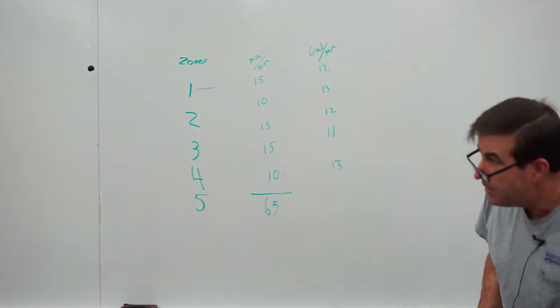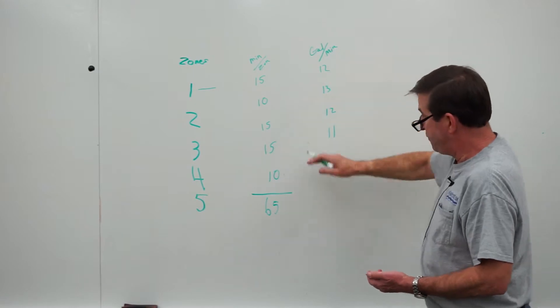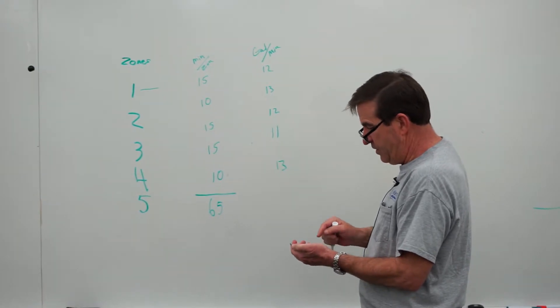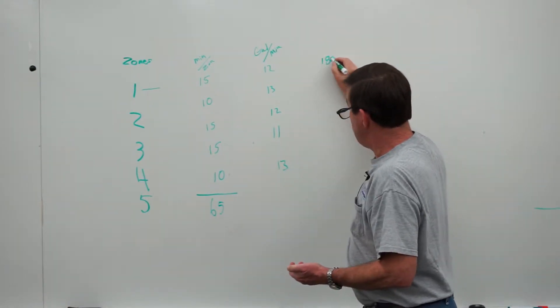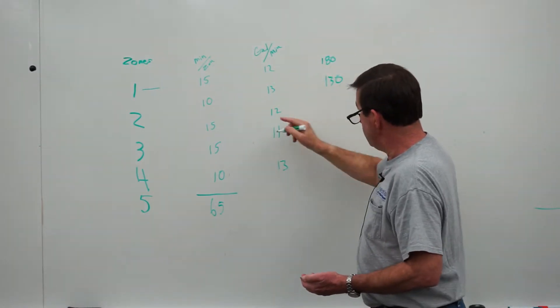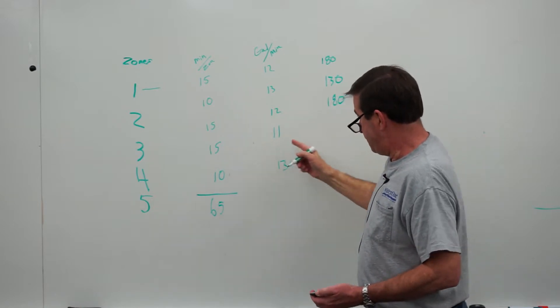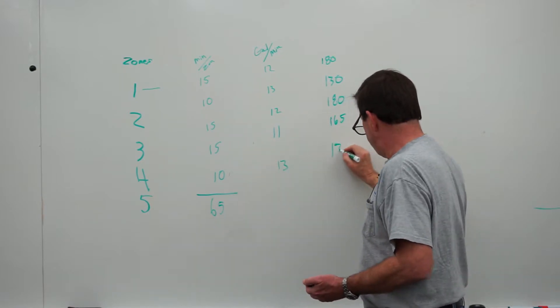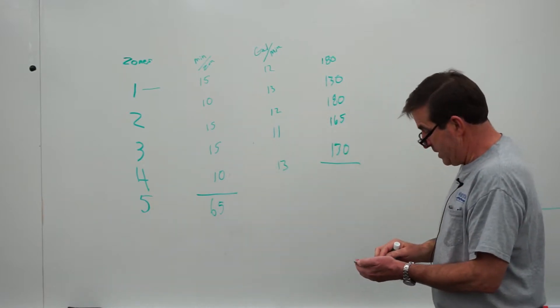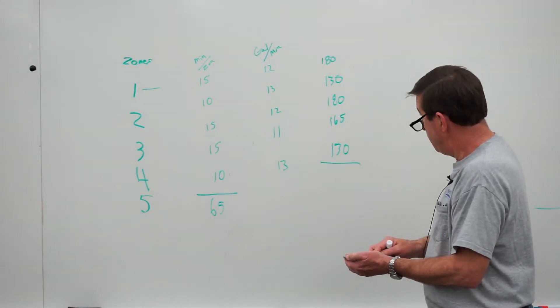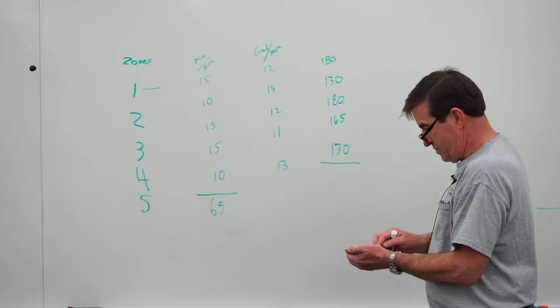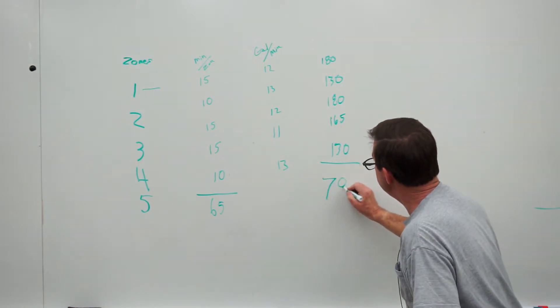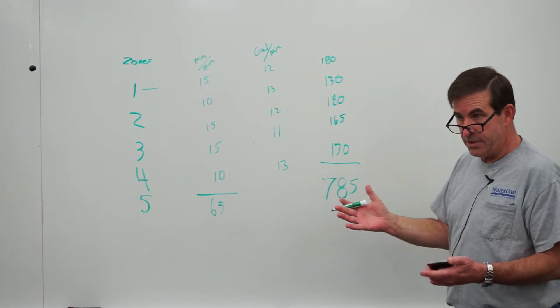So now we're going to use a calculator, figure out how much water this sprinkler uses at those settings. This will just take a minute, but 15 times 12 is 180 gallons of water. That's 130, that's going to be 180, that's going to be 150, 165, that's 130. So when this sprinkler runs, it uses 785 gallons of water, give or take.